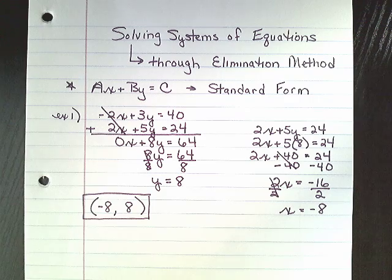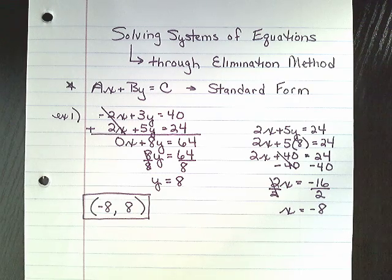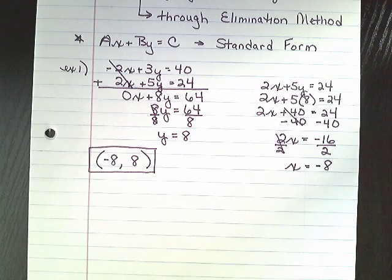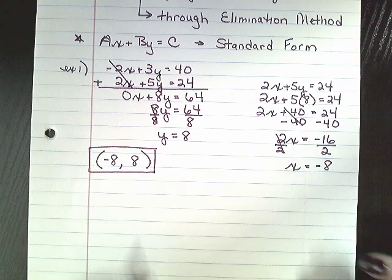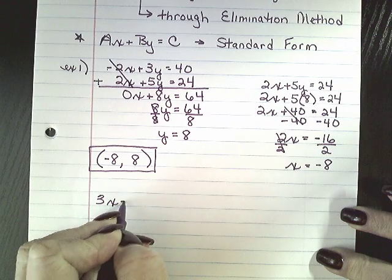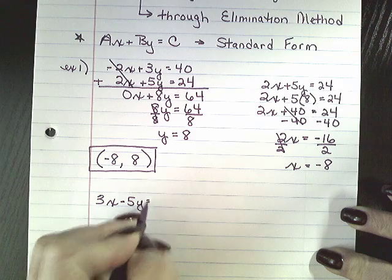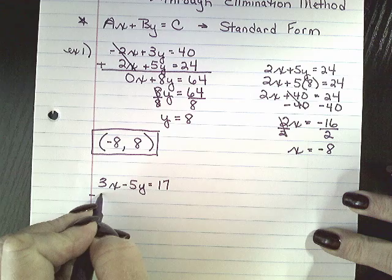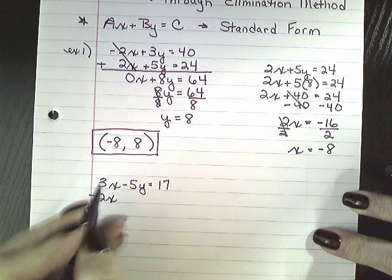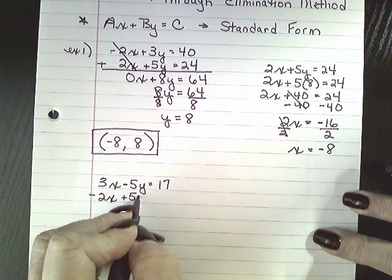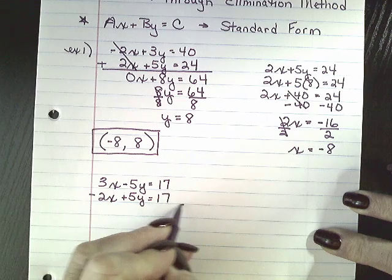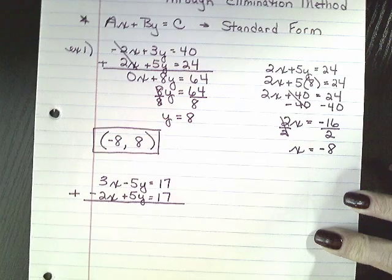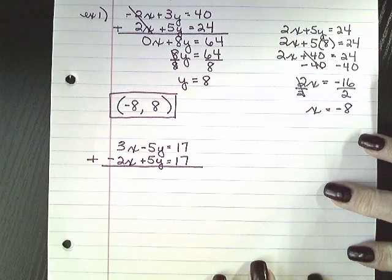If I was to graph these two equations, that would be the point of intersection that I would find when I graph them. Okay, try this one. We have 3x minus 5y equals 17 and negative 2x plus 5y equals 17. Draw your line like it's an addition problem and put in your plus sign. You are reminding yourself that you are adding these equations.